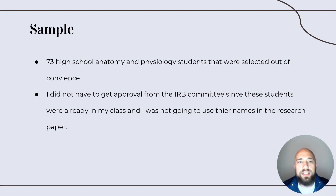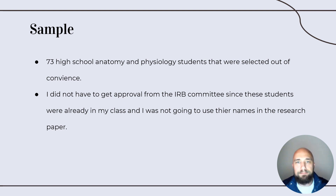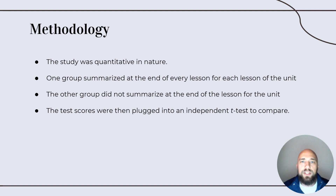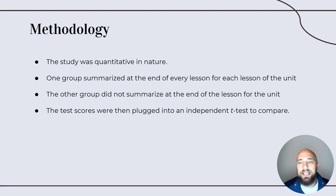For this study, my sample included 73 high school anatomy and physiology students. They were selected by convenience as they were already my students, so I did not need IRB committee approval. This study is quantitative in nature. One group summarized at the end of every lesson throughout the unit, and the other group did not summarize and completed no closing activity whatsoever. Test scores were then entered into an independent T-test to compare and analyze.